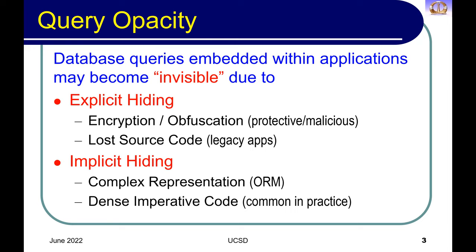Queries that are part of database applications may become invisible or opaque. This could be because of explicit hiding — the application is either encrypted or obfuscated — because you want to protect the intellectual content within the application. Or on the flip side, it could be used for malicious purposes, where you want to hide your real intentions. A more benign reason is that you have the executable but have just lost the source code, which is a particularly common problem with legacy applications where over time you may have forgotten where the source code is.